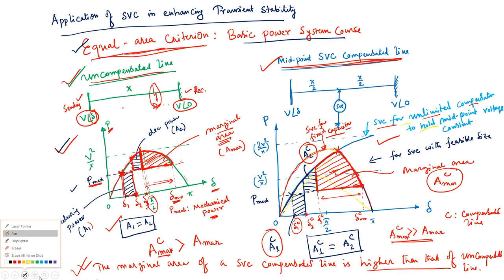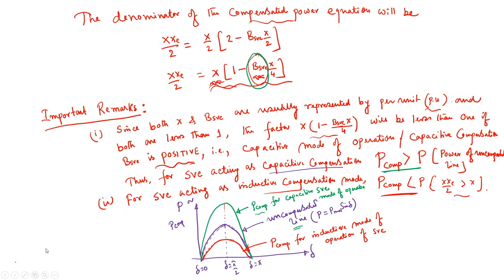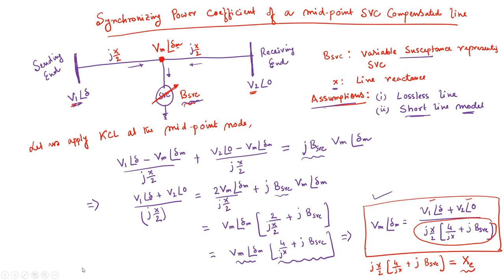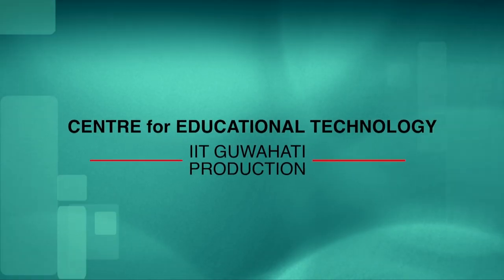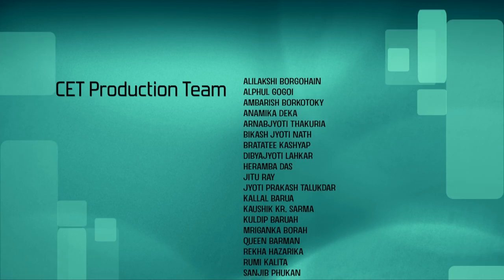The mathematical aspects explained in today's lecture show how different SVC modes of operation result in changes to the active power flow through the transmission line. In the next lecture, we will continue this derivation to arrive at our goal: determining the synchronizing power coefficient of a midpoint SVC compensated line. Thank you very much for attending this part of the lecture.